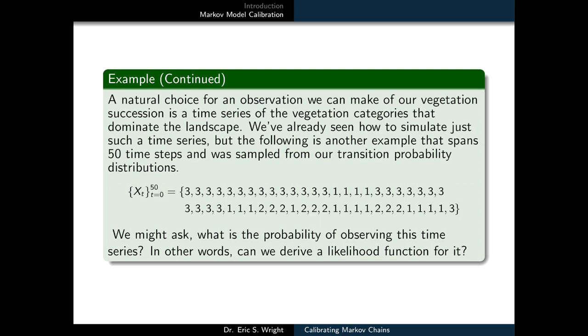So again, the time series that we're looking at represents the dominant states at a sequence of given times. So this particular realization involves a long sequence of threes, which represents bare ground, followed by a shorter sequence of ones, which represents shrubs, and then a sequence of bare ground again, and then more shrubs, and then some grasses, and so on.